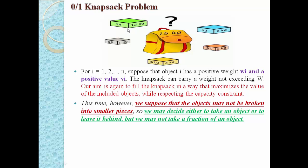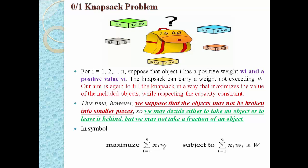For example, for object number one, if we are filling our knapsack using this object, its value is 1; if we are not using this object, it will be 0. That is why this problem is known as the zero-one knapsack problem. In symbolic form, we have to maximize the total value: sum of x_i * v_i for i from 1 to n, where n is the number of objects, subject to the total weight being less than or equal to capital W. The value must be positive, weight must be positive, and each x_i must be either zero or one.